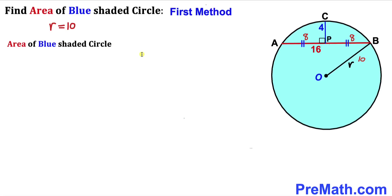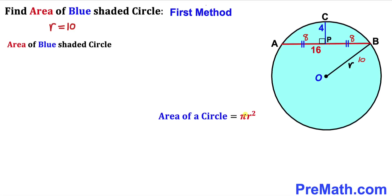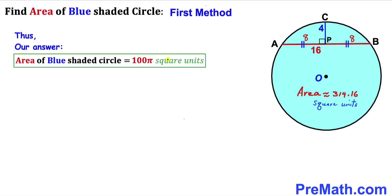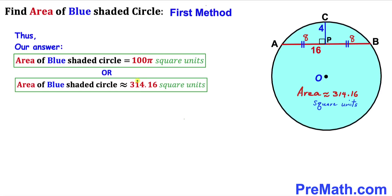Now let's calculate the area of this blue shaded circle. Recall the formula: area equals pi times r squared. Our radius r is 10, so the area equals pi times 10 squared, which gives us 100 pi square units, approximately equal to 314.16 square units.